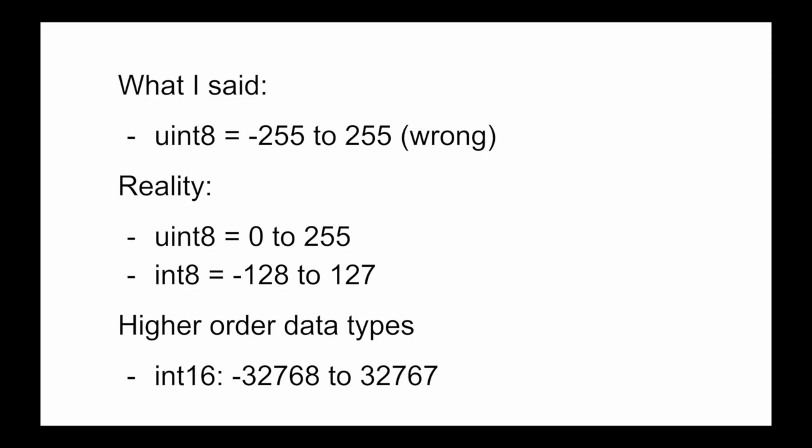First off, I'd like to clarify an error on my part. So far we have been working with the uint datatype, that stands for unsigned integer. In previous videos I have said that values in the 8-bit uint datatype, also known as uint8, can have values ranging from negative 255 to positive 255. This was a mistake on my part. Really, they can only have values from 0 to 255, for a total of 256 unique numbers, that's 2 to the power 8.